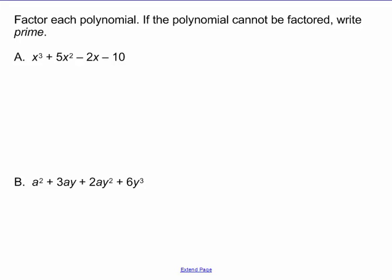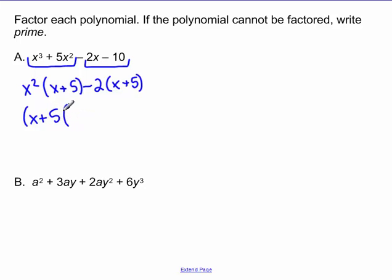This one is technically a review of factoring by grouping that we did before, but just to review with you guys. Group the first two terms together. Factor out your GCF, which is an x². And then I'm left with x + 5. Here, factor out your GCF. But you remember, you take the same sign. So I'm factoring out a negative 2, and I'm left with x + 5. In both of these terms, this is one term, this is another term, I have x + 5. So that's kind of like a GCF that I factor out. And then I'm left with x² - 2.